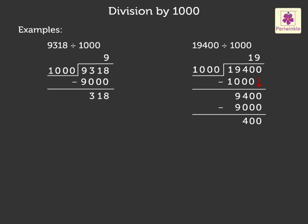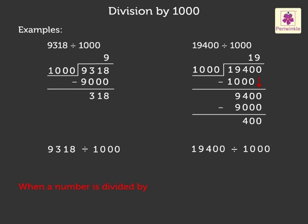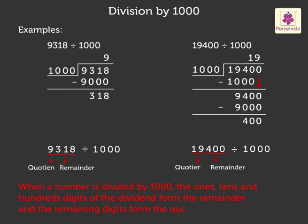Now look at the second example: nineteen thousand four hundred divided by one thousand. Here, we got the quotient as nineteen and remainder as four hundred. Here, when we divided both the numbers by one thousand, the ones, tens, and hundreds digits of the dividend formed the remainder and the remaining digits formed the quotient.